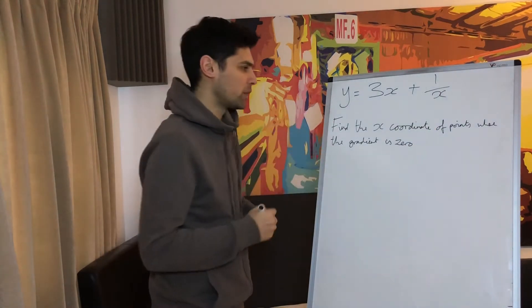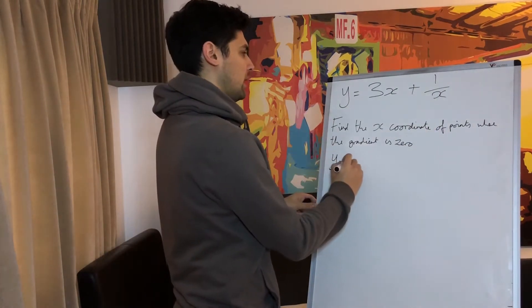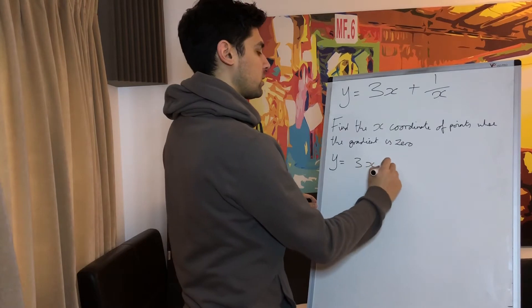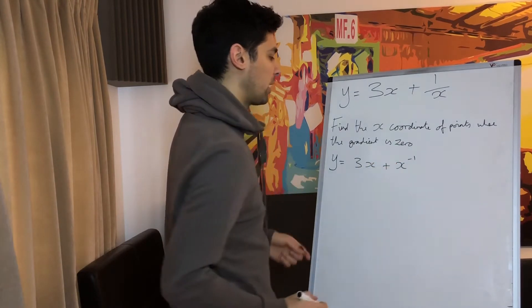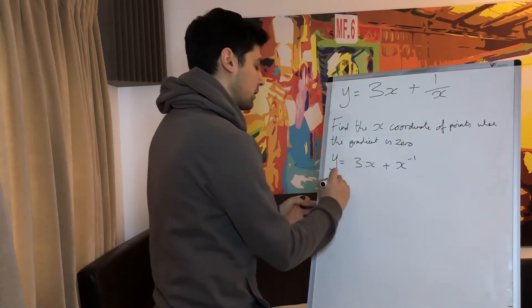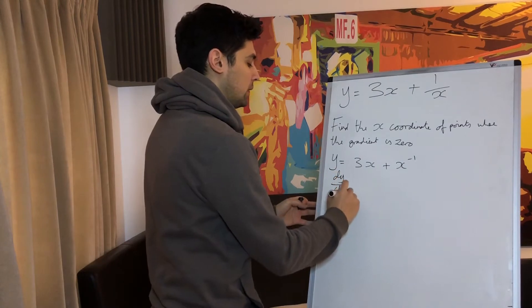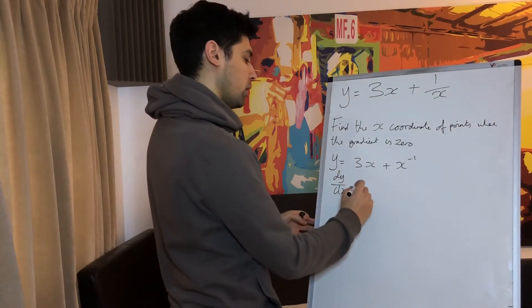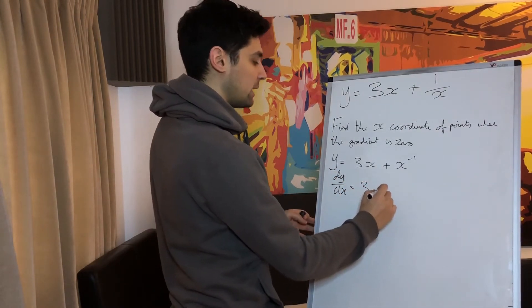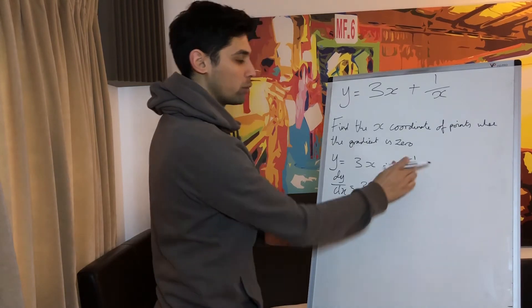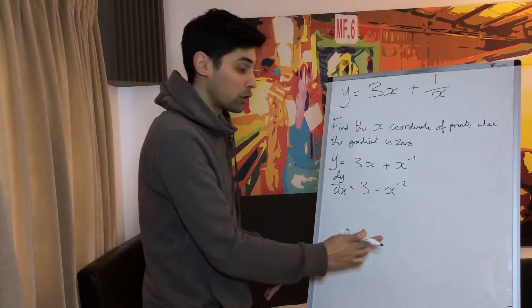So let's first of all write it as y equals 3x plus x to the minus 1. Now when we differentiate, dy/dx equals 3 minus x to the minus 2 because we bring the minus 1 down, minus 1 from the power. So this is the gradient function.